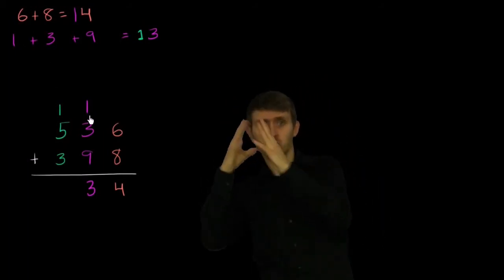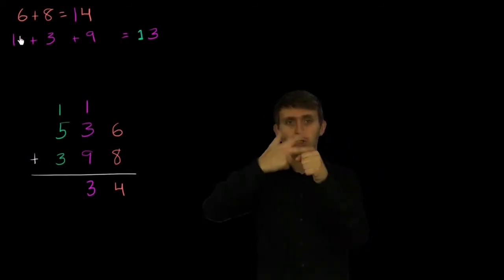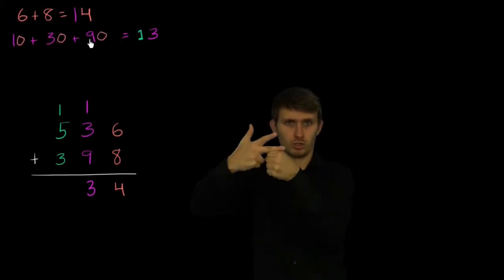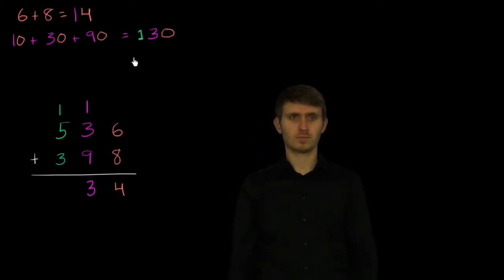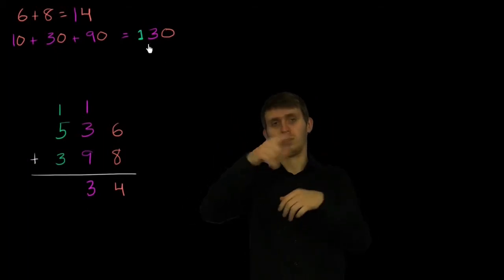When we're adding 1 ten plus 3 tens plus 9 tens, we're actually adding 10 plus 30 plus 90. And we're getting 130. And so we're putting the 30, the 3 in the tens place represents the 30.